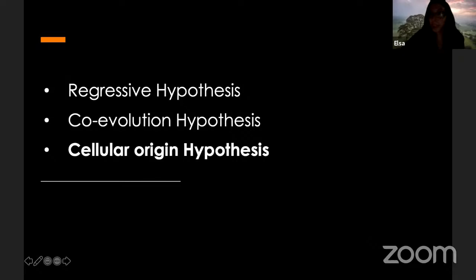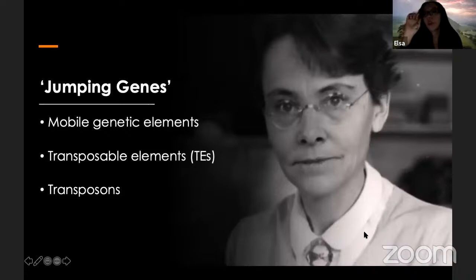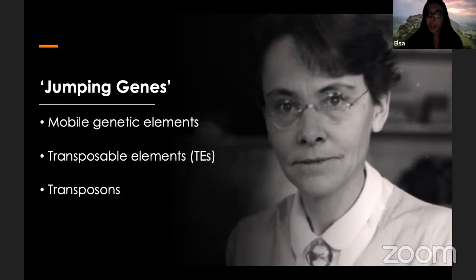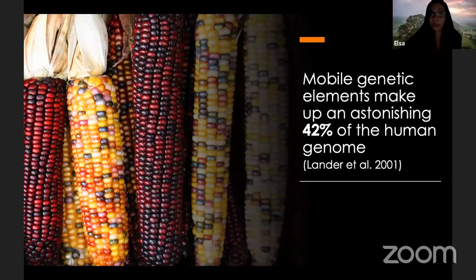You might ask how exactly genetic material can escape, as it implies some sort of mobility. Most of you might already be familiar with so-called jumping genes or transposons — molecules of DNA that replicate and are capable of moving around the genome. Barbara McClintock was awarded the Nobel Prize for Physiology or Medicine in 1983 for this discovery. Strikingly, these genetic elements make up an astonishing 42% of our human genome and up to 90% of the maize genome, which was also the model organism Barbara used for her initial research.